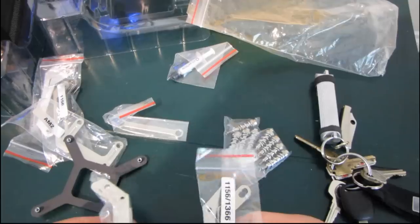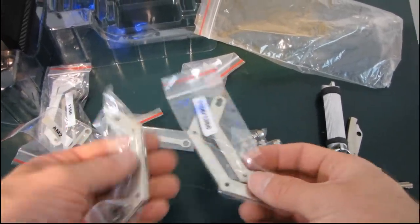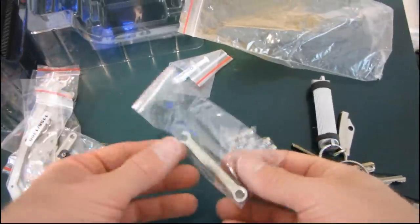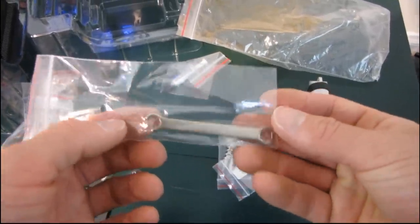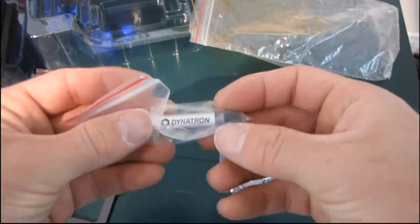Oh, these must be the top pieces. So some of these are back plates, some of them are top pieces, and we'll have to sort that out later. Here's a little wrench. It's very adorable. Some Dynatron thermal compound.